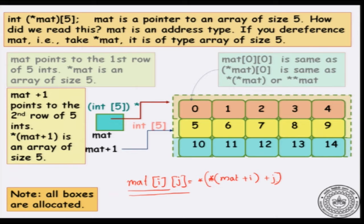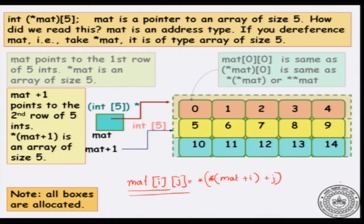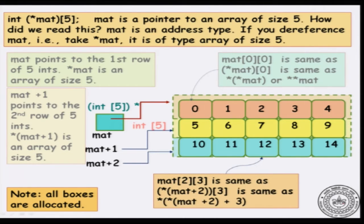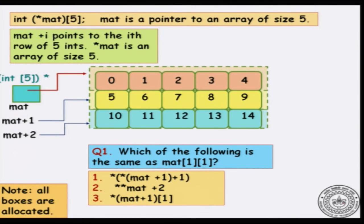mat+1 points to the second row of 5 integers. Remember that the type of mat is a pointer to an array of size 5 of integers, so the next pointer location when you do mat+1 goes to the next array of size 5. mat+1 is another array of size 5 — in particular it may be the second row of a 2D array with 5 columns. mat+2 will similarly be the third row, and so on. For example, mat[2][3] applies the formula to give *(*(mat+2)+3). Notice that all boxes are allocated in this example. mat+i points to the i-th row of 5 integers, and *mat is an array of size 5.